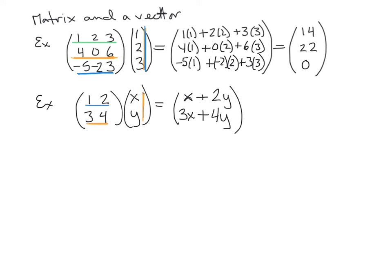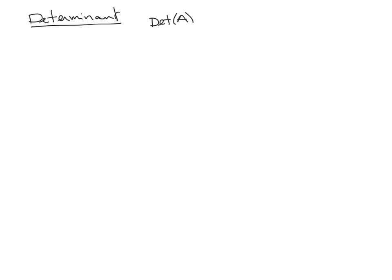One more important topic: the determinant. The notation is either det(A) or absolute value symbols around the matrix. For a 2×2 matrix [a b / c d], the determinant is a×d − c×b. I think of this as multiplying diagonally: multiply down (a times d), then subtract the upward diagonal (c times b).